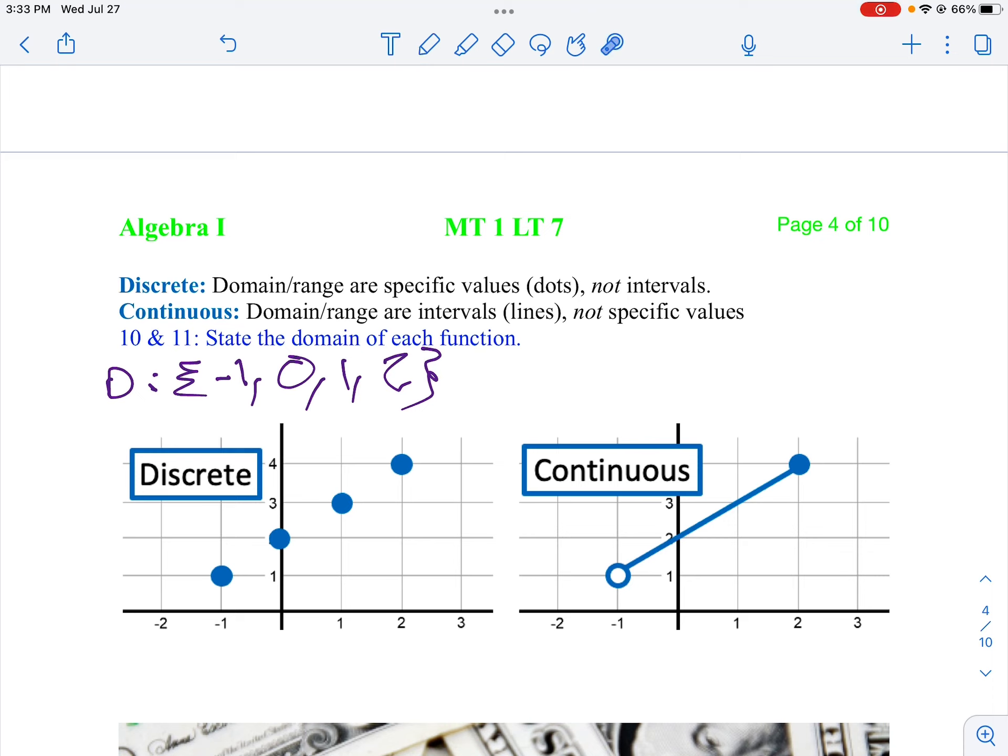My range is also going to be discrete, except my range goes from, my y value goes from 1 up to 4. So I'll go 1, 2, 3, and 4.